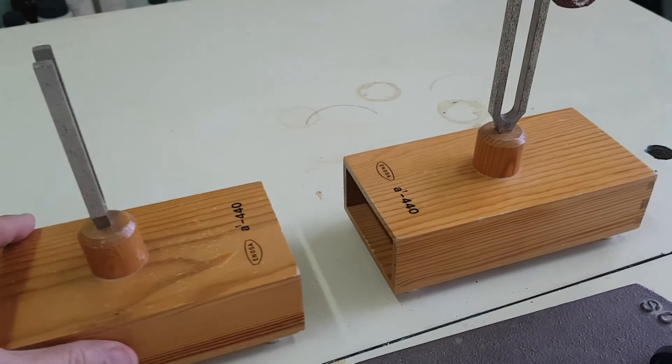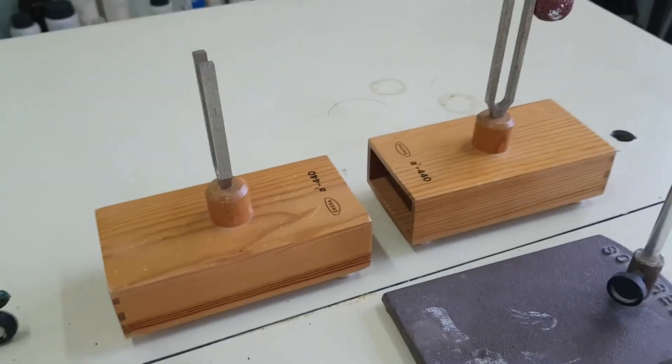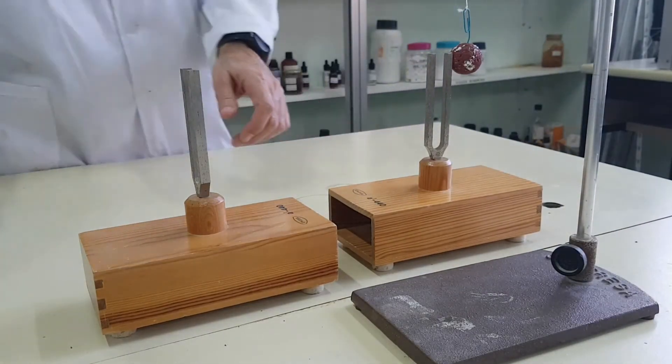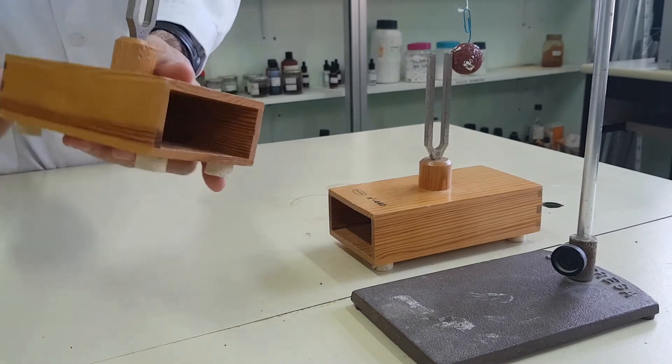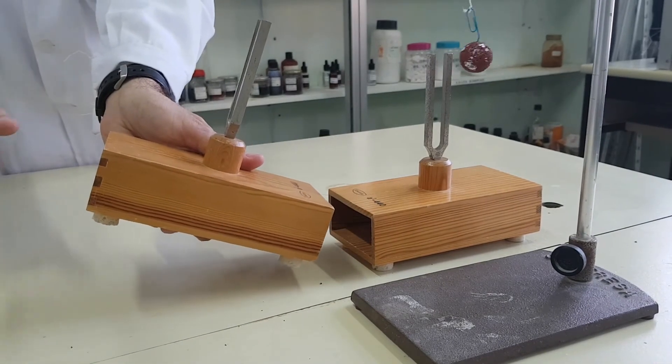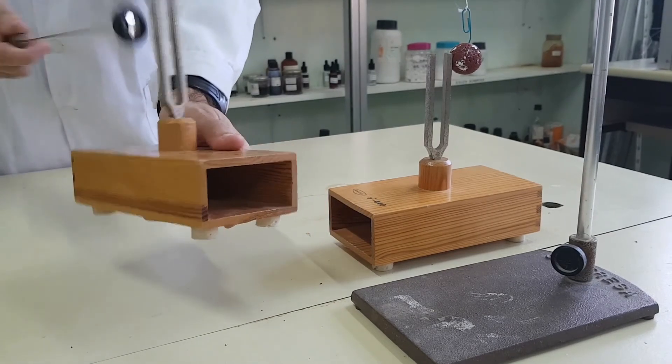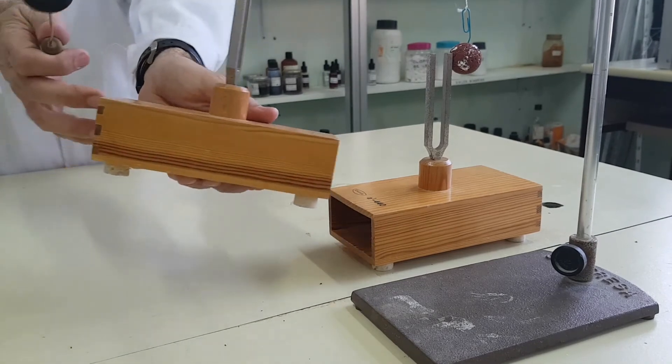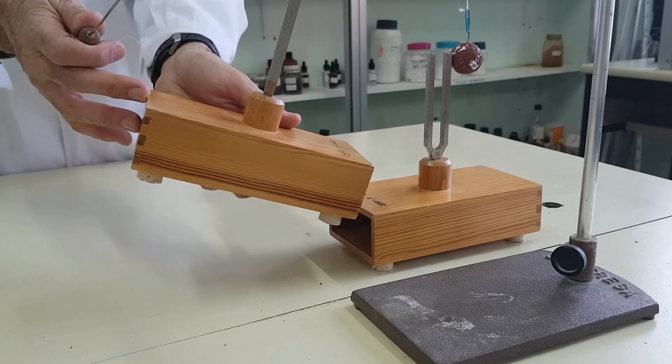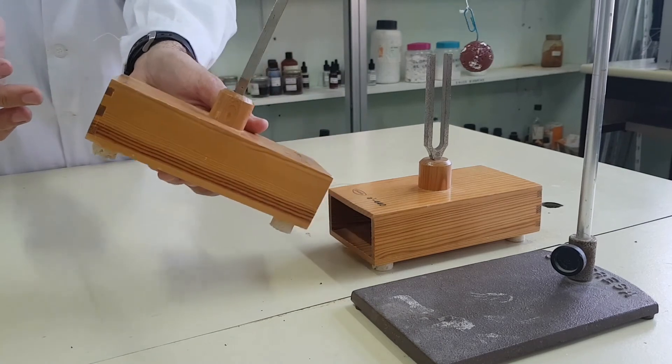Let's check that the vibrations are transmitted through the solid and gaseous media and will make the little ball move. The little ball moves because the tuning fork vibrates. The vibration is transmitted through the air or through the direct contact between the resonance boxes.